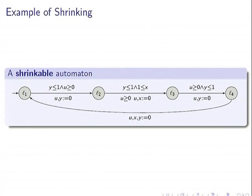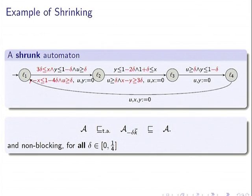To show how a shrunk automaton looks: applying the algorithm to this example, it reports the automaton is shrinkable and gives the red parameters. One becomes 1 − δ, and we have 2δ, 3δ, 4δ — so we really need different parameters for each atomic clock constraint. Both properties, non-blocking and simulation equivalence, hold for all δ between 0 and 1/4. In general, all results hold for all small enough δ.